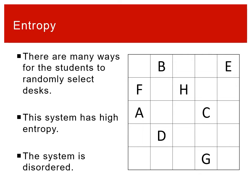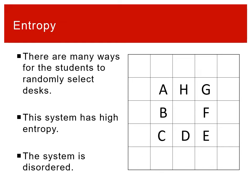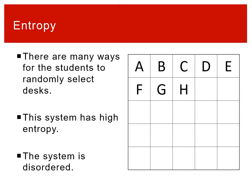If we allow students to randomly choose seats, there are a lot of possibilities. The issue is not that people are randomly arranged, but that the parameters allow them to go wherever they want, meaning there are many possibilities. Some of those possibilities may even look ordered, but because there are so many unique ways the system can look, it has very high entropy.